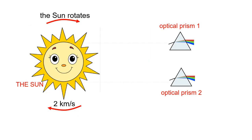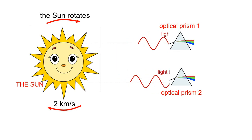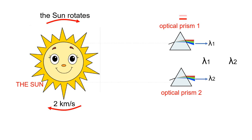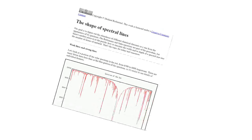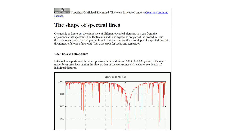When measuring the wavelength of light with an optical prism, it is different. We measure the same wavelengths in the light from both edges of the sun. In this case, the speed of the light source does not affect the measured wavelength of light. The same wavelength from both edges is also measured when light is measured with an interferometer. The measurement is described in the article, 'The Shape of Spectral Lines.'